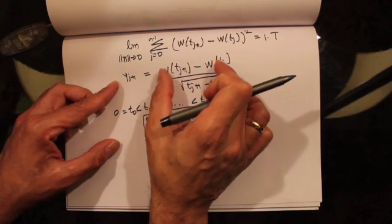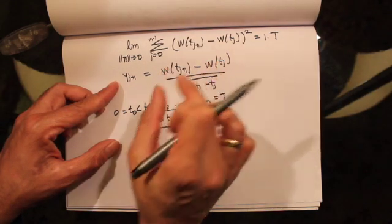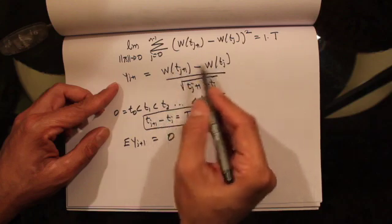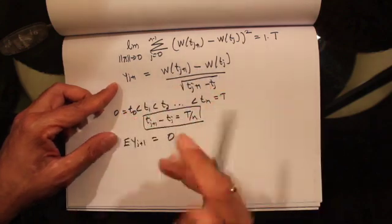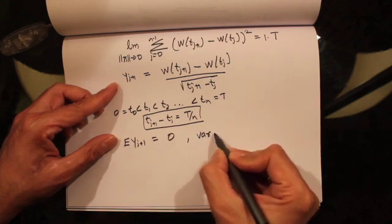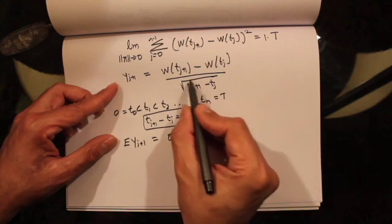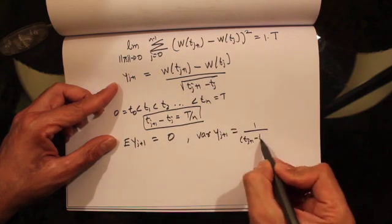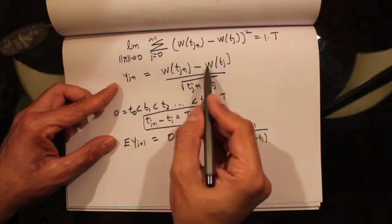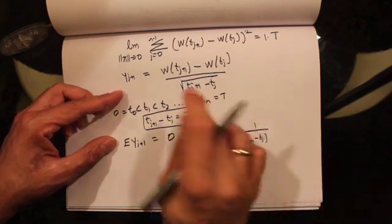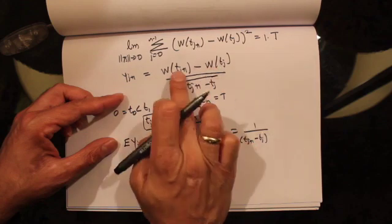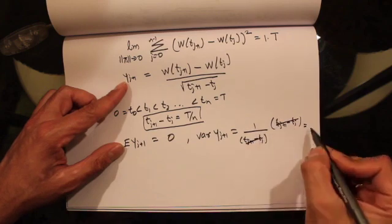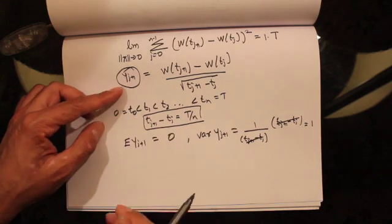They are also normally distributed because each Brownian motion increment is normally distributed. The expected value of Y_{j+1} equals 0, since the expected value of a Brownian motion increment is 0. The variance of Y_{j+1} equals (t_{j+1} minus t_j) times 1 over (t_{j+1} minus t_j), which equals 1. So Y_{j+1} are independent standard normal random variables with mean 0 and variance 1.